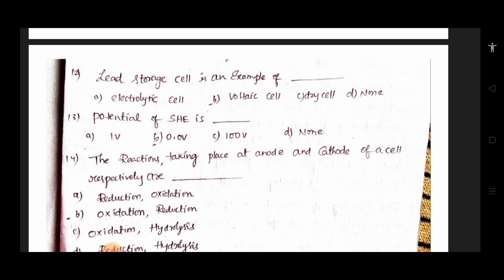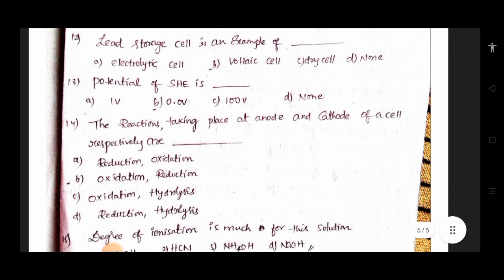We have a lot of options to eliminate. The value to be anode, so it is 1 volt or 0.0 volt and 0.04 volt. We will try to take a little bit more. The reactions are taking place at anode and cathode of a cell respectively.